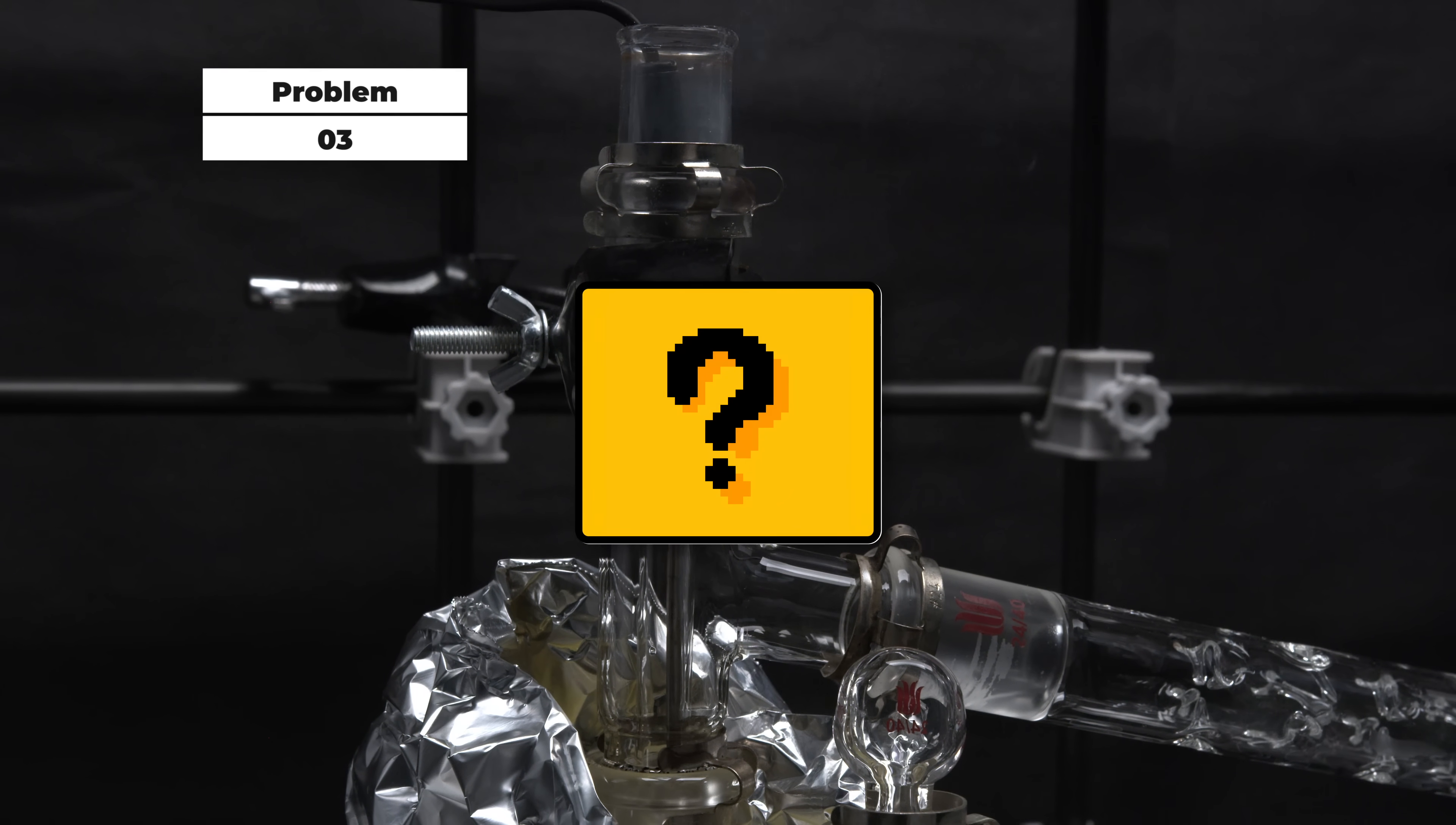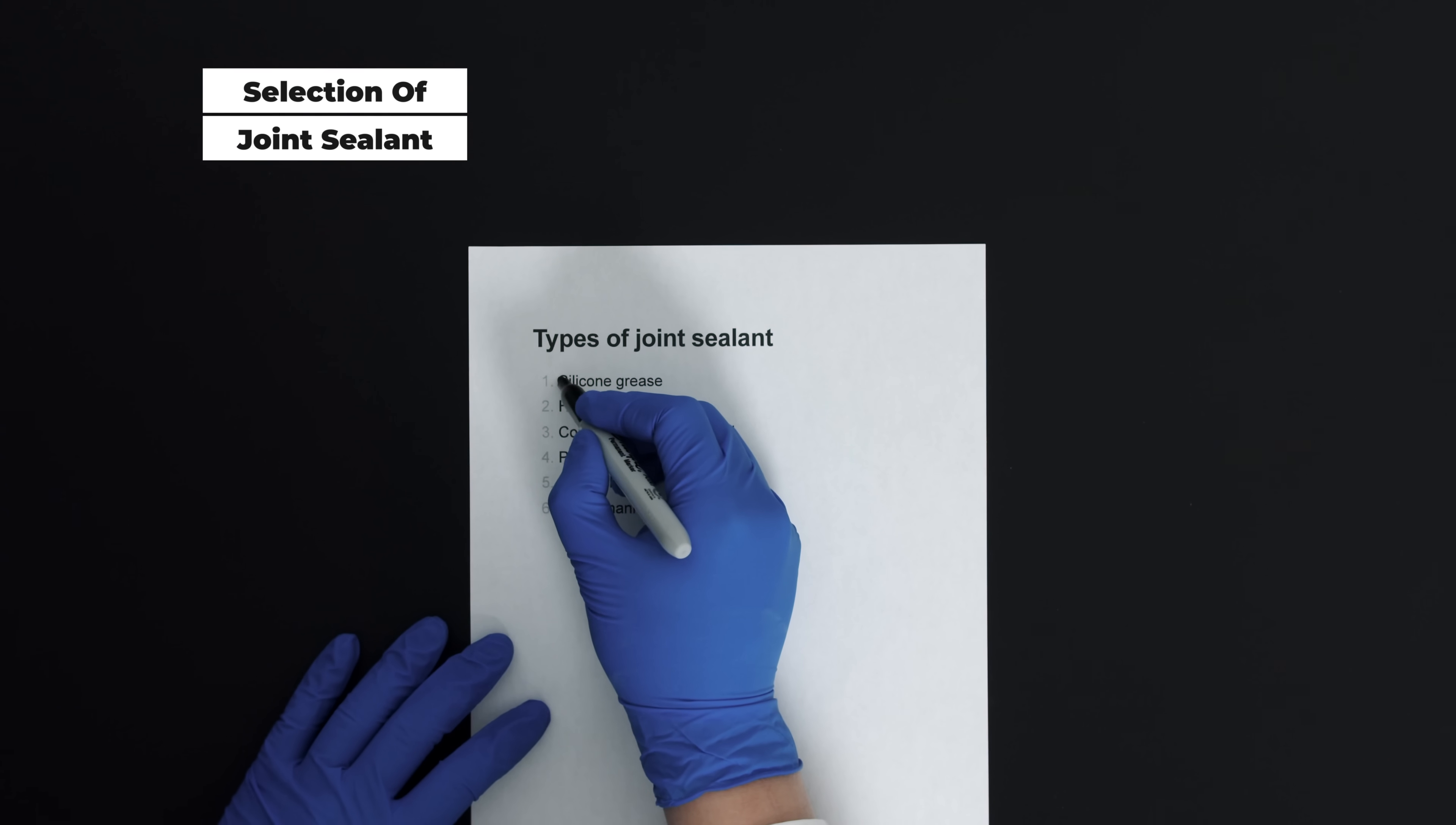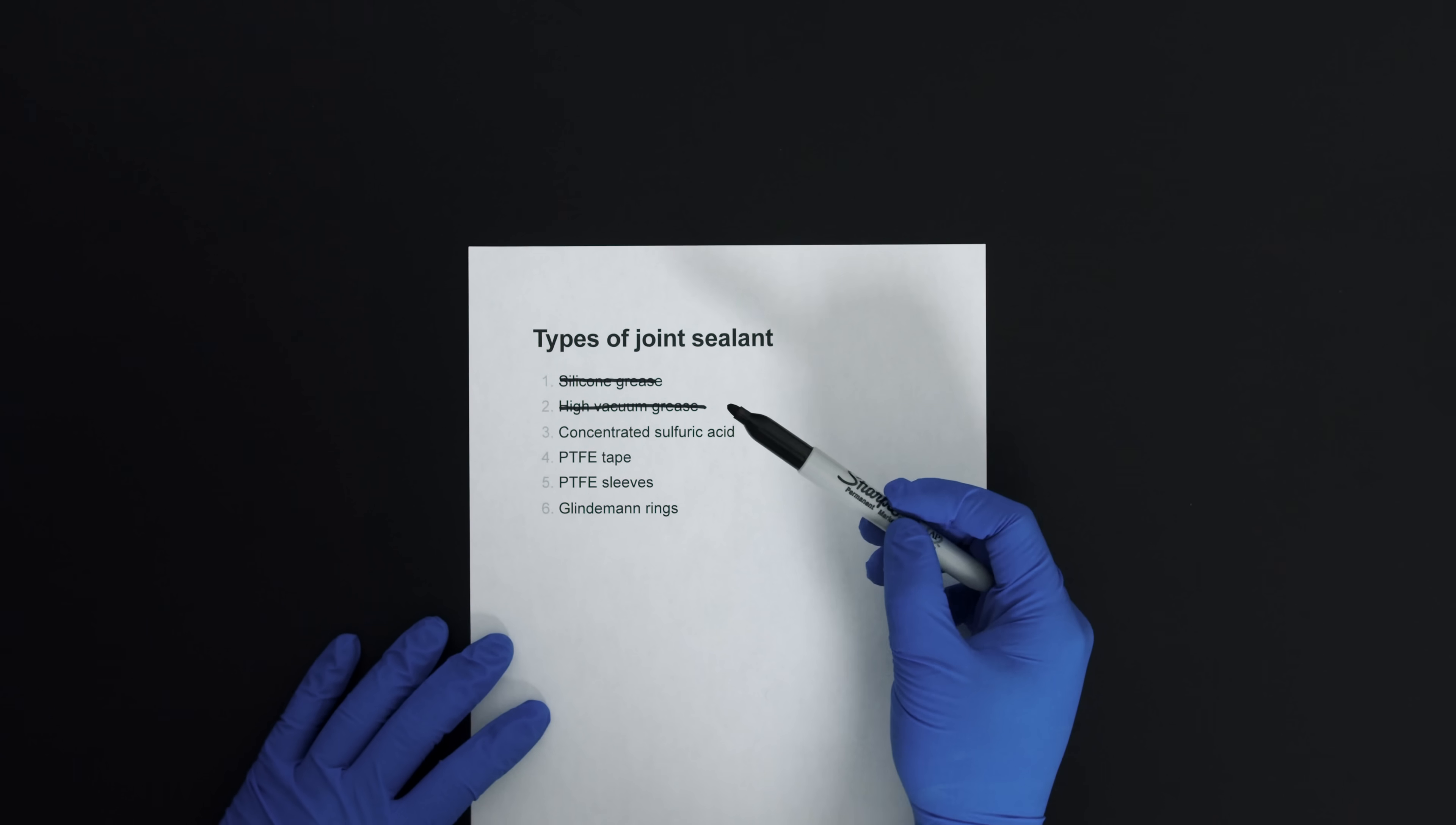And here comes problem number 3: leakage during the distillation. It is rather common for leakage to occur in this experiment, especially when the setup reaches the boiling temperature of 98% sulfuric acid. It is however not a big deal compared to the first two problems, but it can still cause issue for you and your surroundings if not managed properly. The problem exists simply because joint sealants are very limited for this experiment. Sulfuric acid is highly corrosive and oxidizing at high temperatures.